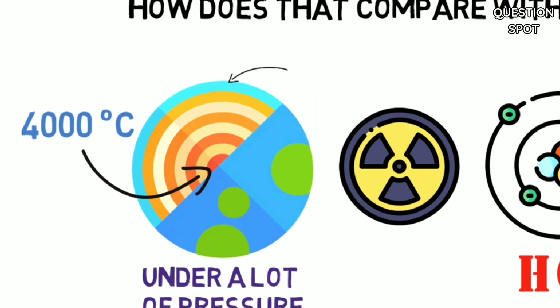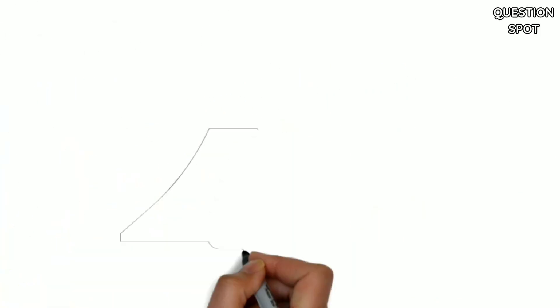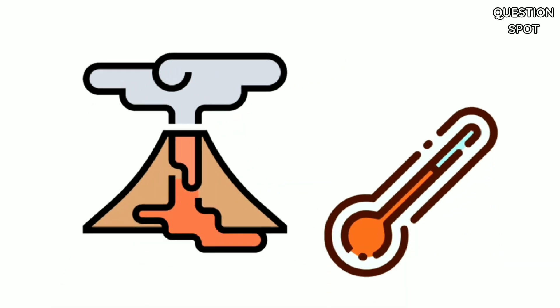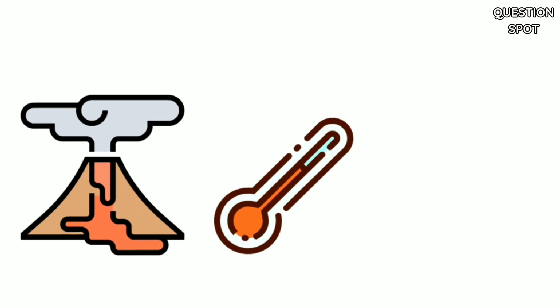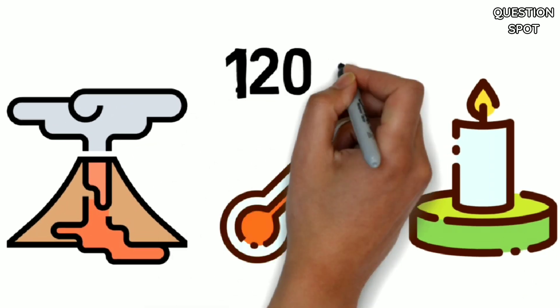But near the surface, the molten rock, or magma, is a lot cooler. In fact, as it spills out onto Earth's surface as lava, the runny rock's temperature is only a little lower than the hottest part of a candle flame, about 1200 degrees Celsius.